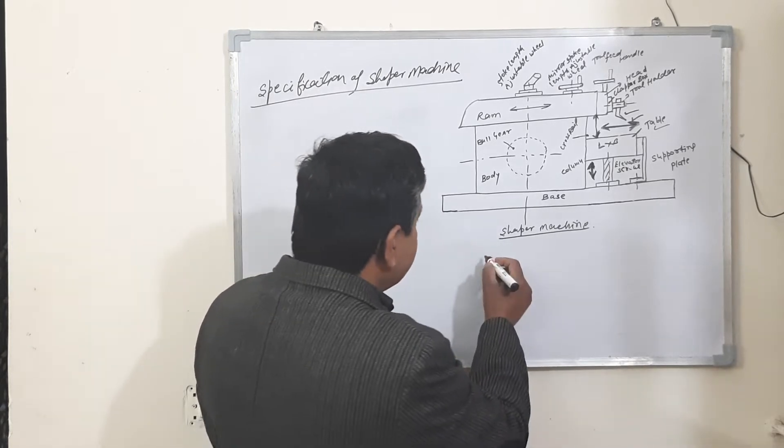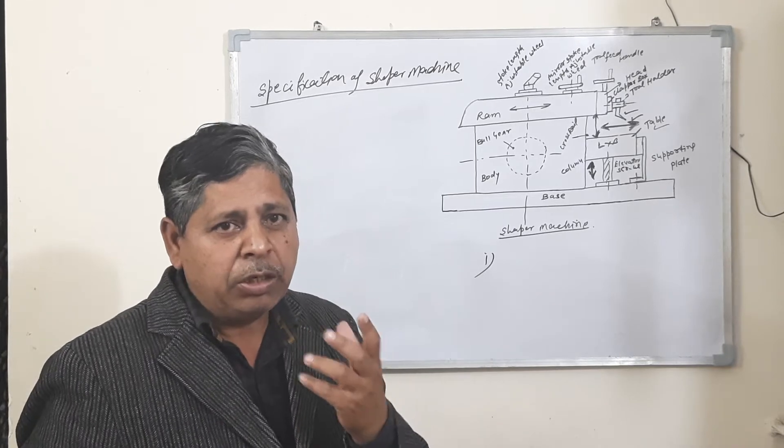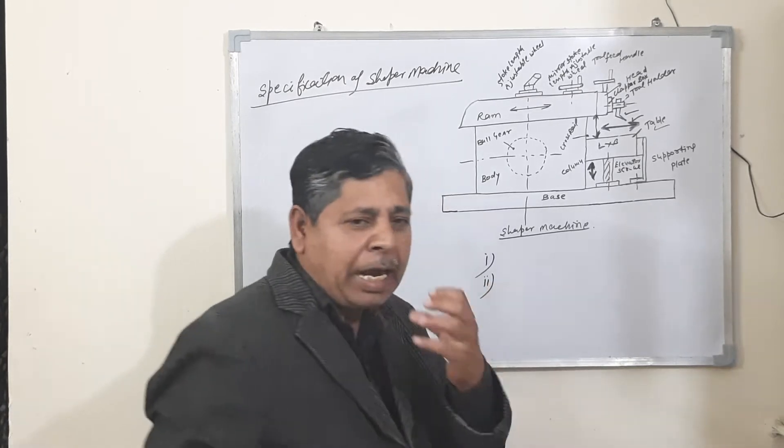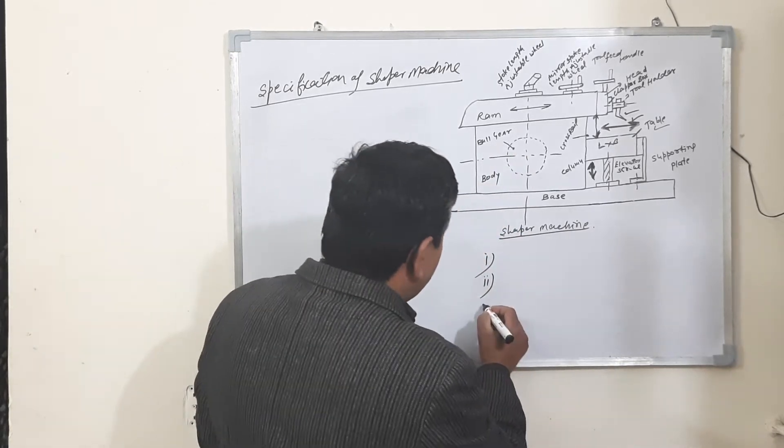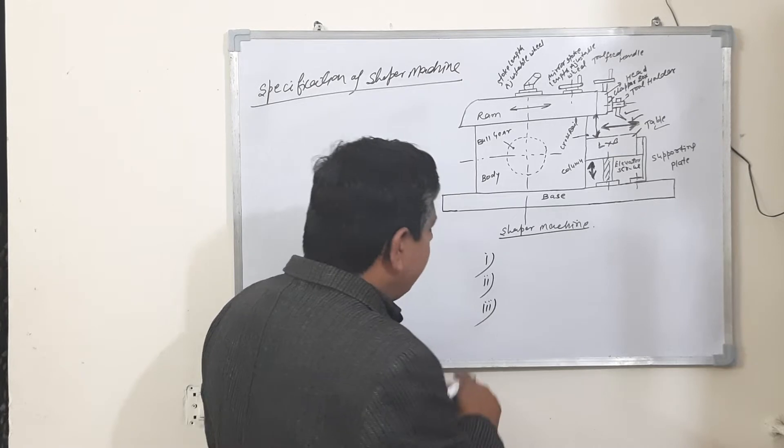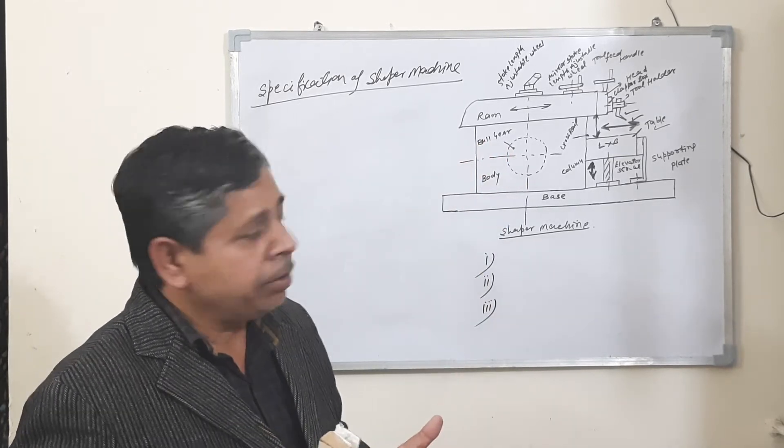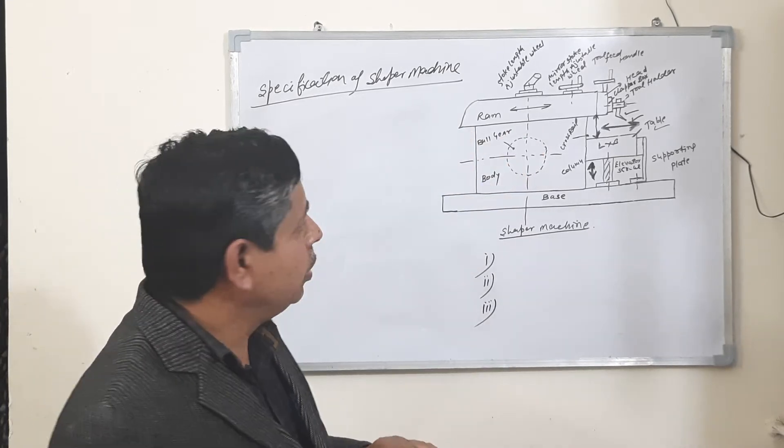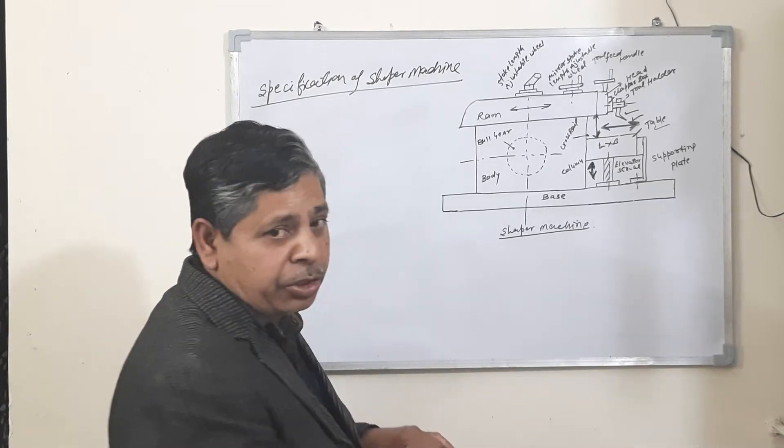Number one: what is your requirement? Number two: what type of components are to be made on the shaper machine? Number three: which company made the shaper machine? These are the factors used when purchasing the machine.